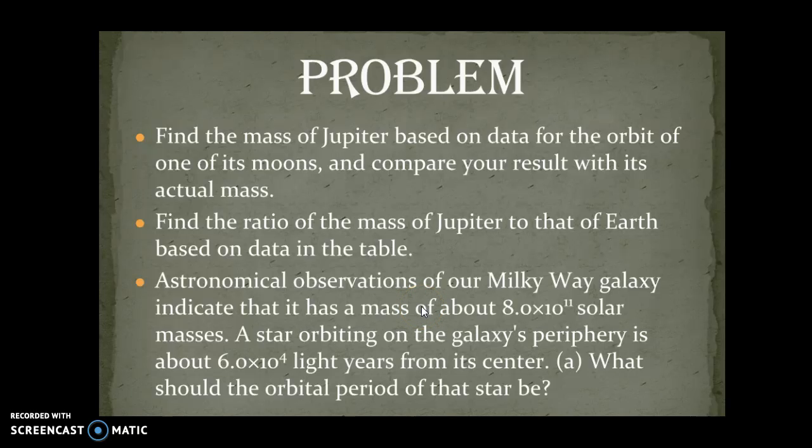First one is find the mass of Jupiter based on data for the orbit of one of its moons and compare your results with its actual mass. I ended up using all of its moons to compare, so I'm taking the average, but I'll explain that later. Second part is to find the ratio of the mass of Jupiter to that of Earth based on data in the table. The data is given in a book that we got for AP Physics.